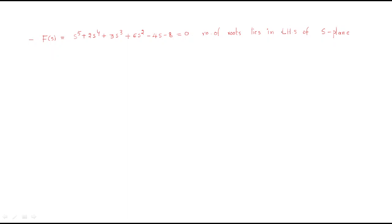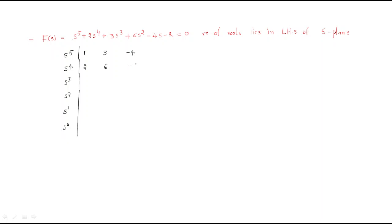We are asked how many left-hand side roots of the s-plane exist. To find this, we will use the R-H criteria. In the R-H table format, we take rows for s⁵, s⁴, s³, s², s¹, and s⁰. The coefficients are 1, 2, 3, 6, -4, and -8 respectively.